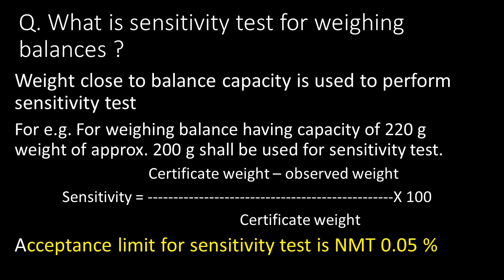What is the sensitivity test for weighing balances? A weight close to the weighing balance capacity is used to perform the sensitivity test. For example, for a weighing balance with a capacity of 220 grams, we should use approximately 200 grams weight for the sensitivity test. It can be calculated with the given formula and the acceptance limit for the sensitivity test as per USP is not more than 0.05 percent.